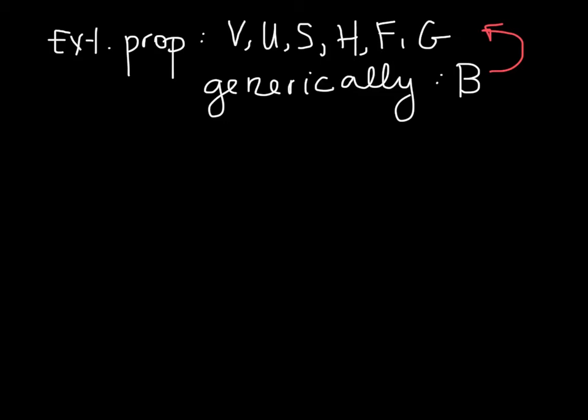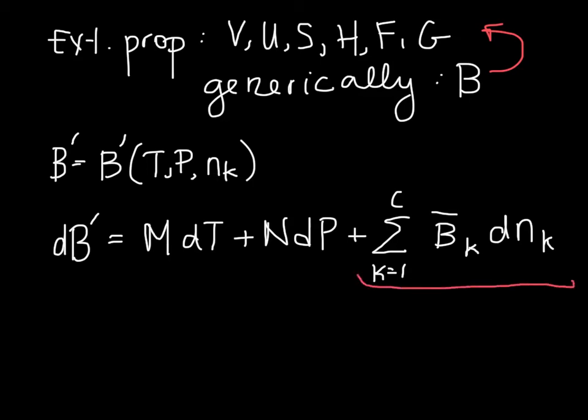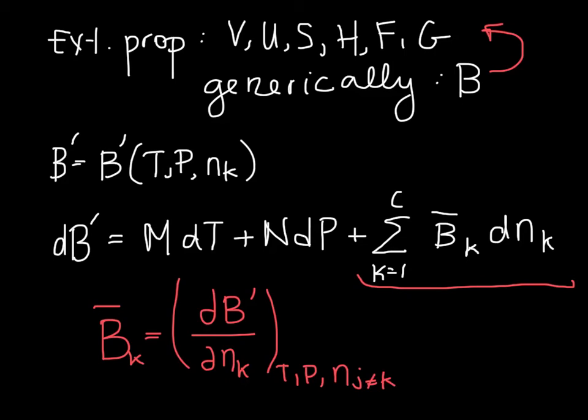So, if we want to write an expression then for B, we know that B is a function of T, P, and all of the different number of moles. So, we can write then that the change in B is equal to some coefficient dT plus some other coefficient dP plus the sum over all of our species, the partial molar B times dN. So, here's our partial molar properties. And, just as a reminder, generically, this is how B bar is defined. It's the change in the total system property as we add more of species K.